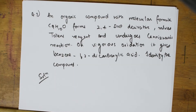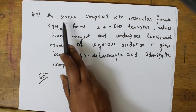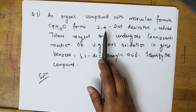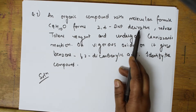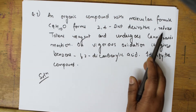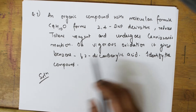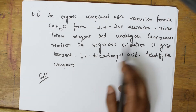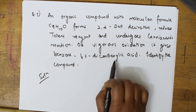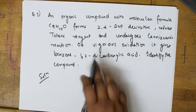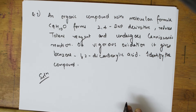Let us come back and do the seventh question. Question number seven: an organic compound with molecular formula C9H10O forms 2,4-DNP derivative, reduces Tollens reagent, and undergoes Cannizzaro's reaction. On vigorous oxidation it gives benzene 1,2-dicarboxylic acid. Identify the compound.